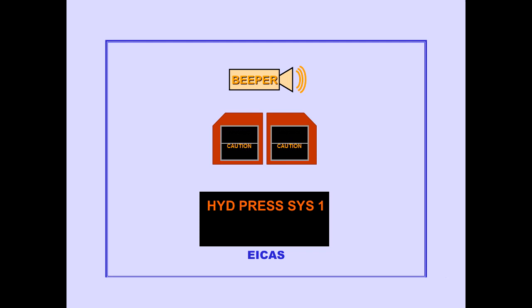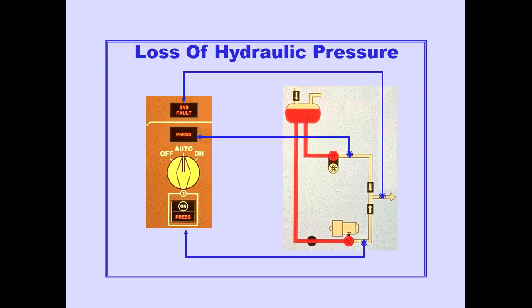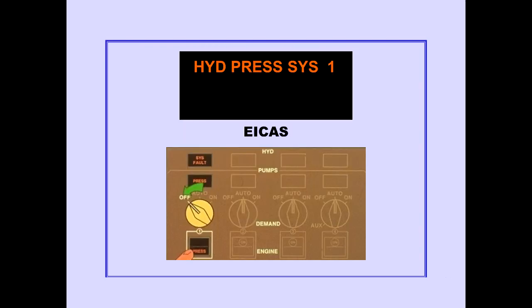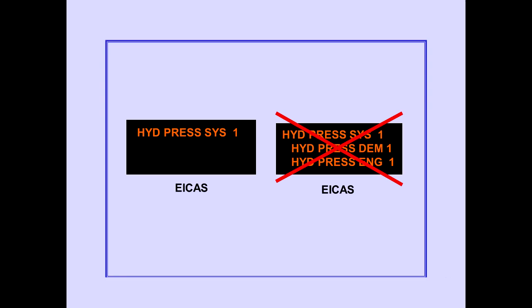The ICAS Caution Message Hydraulic Pressure System is displayed when there is a loss of hydraulic system pressure. The system fault light, demand pump low pressure light, and engine pump low pressure light illuminate. Rotating the demand pump selector off and pushing the engine pump switch off prevents possible damage to the pumps and contamination to the system. The ICAS Caution Message Hydraulic Pressure System inhibits the individual pump low pressure messages in a hydraulic low pressure system condition.